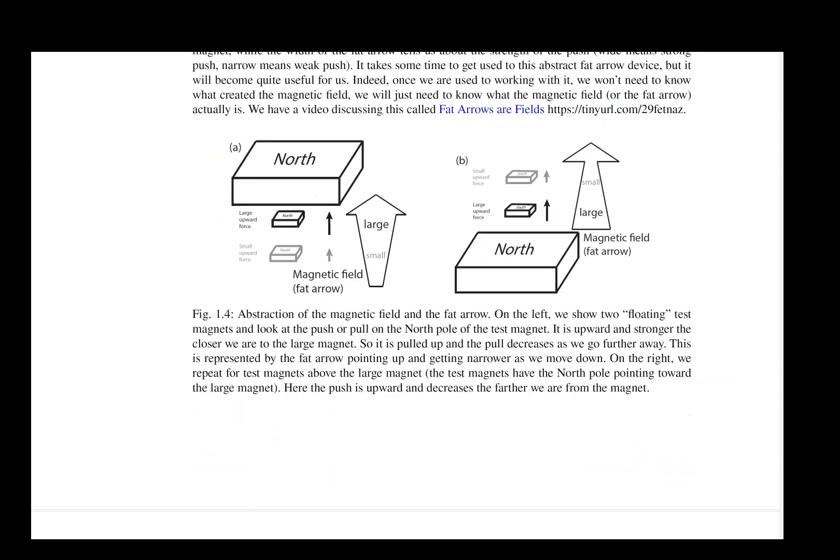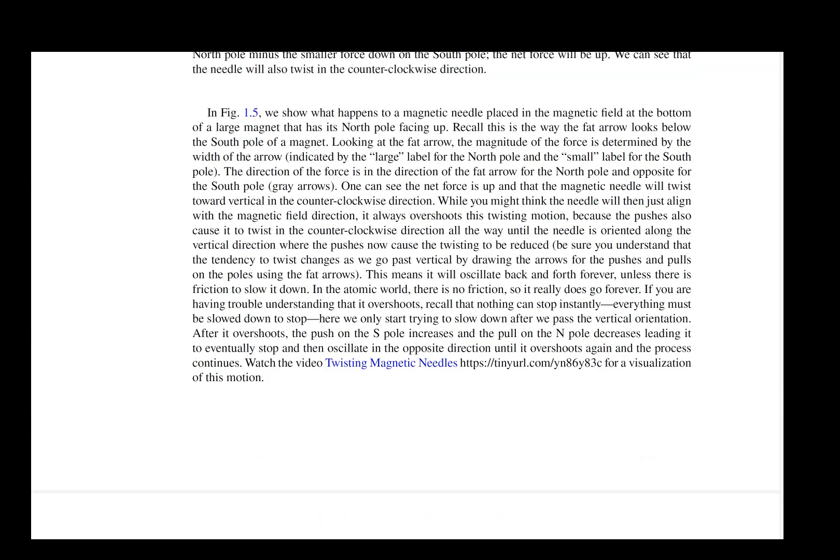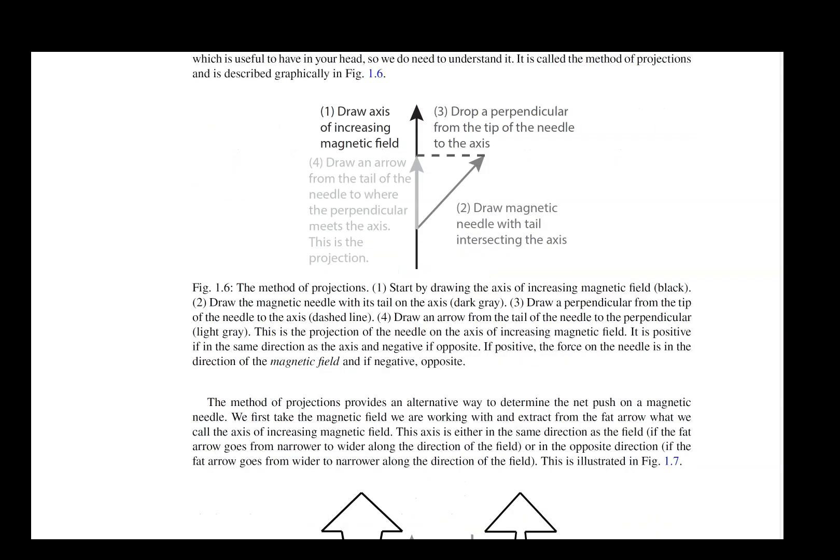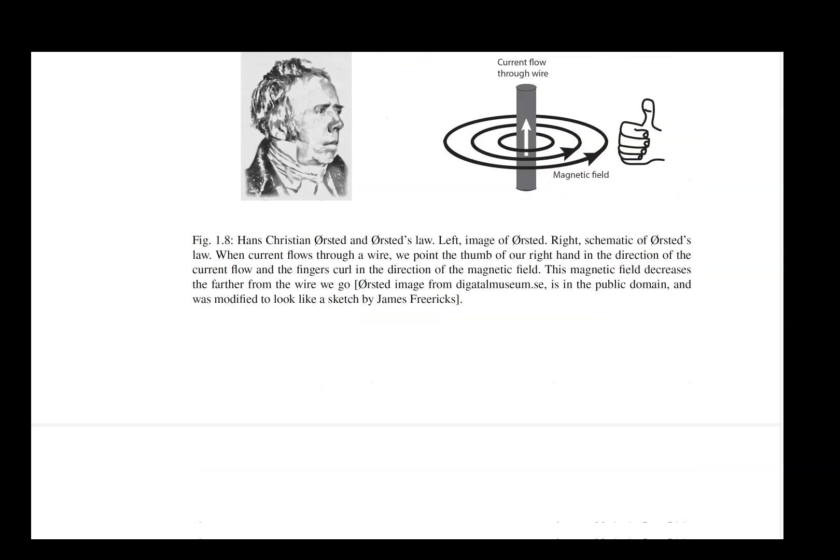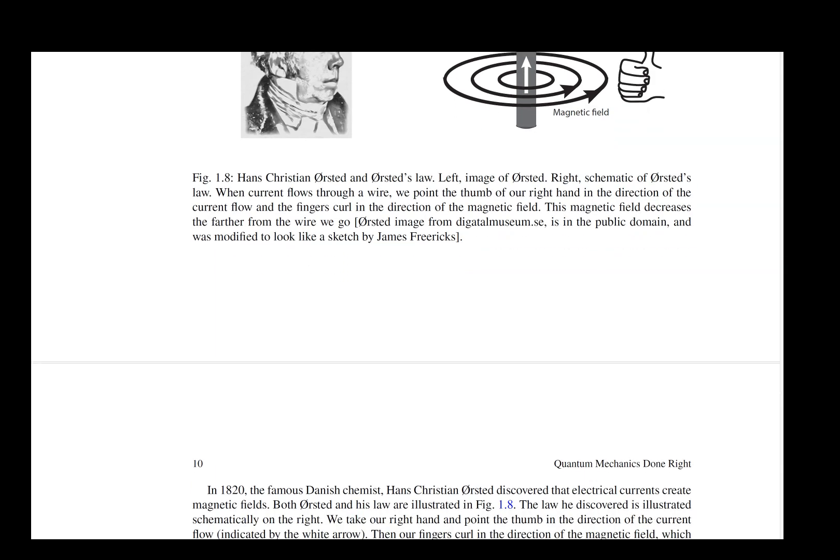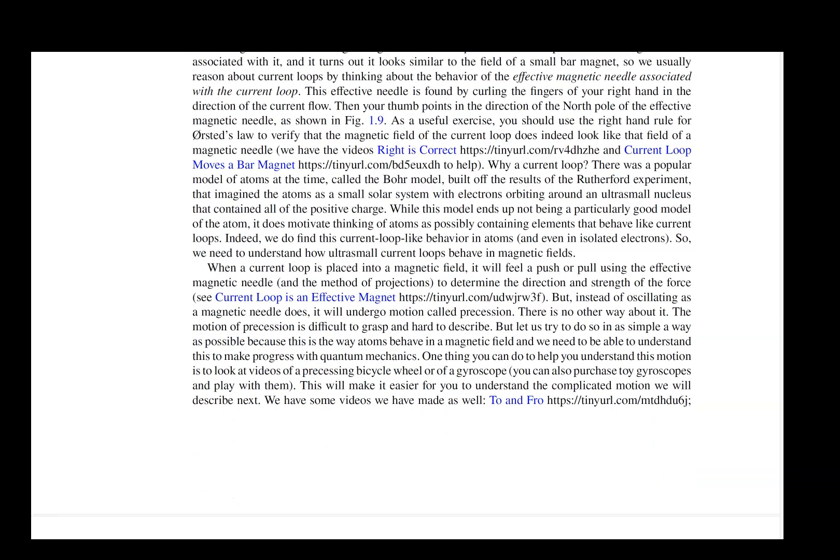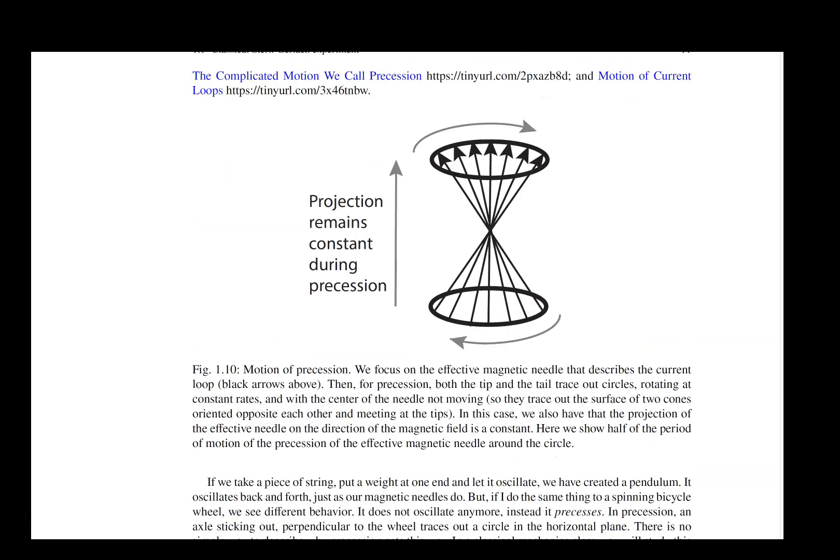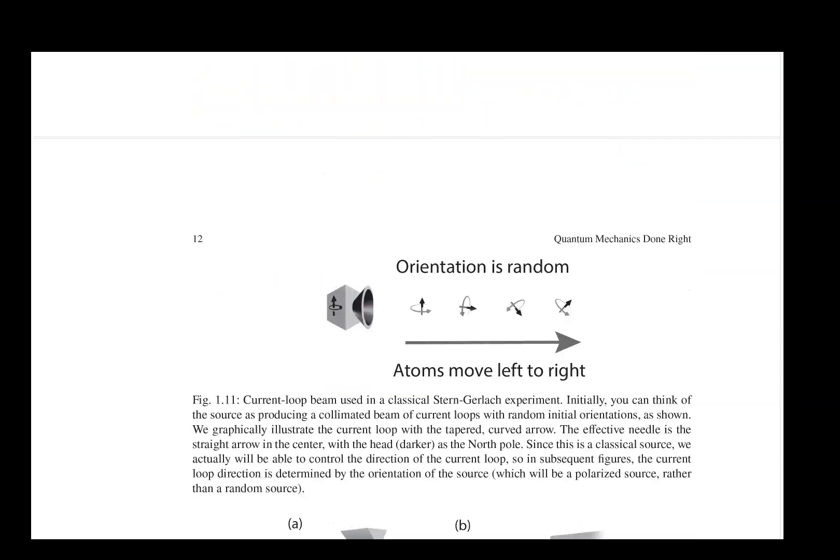And then we'll just dive into how a classical Stern-Gerlach experiment works. We have this wonderful paradigm that was invented by Daniel Steyer about how we can think of inhomogeneous magnetic fields by using fat arrows. We use that to describe how magnets work and what kind of forces magnets will feel. And then we move into talking about current loops. These were discovered by Oersted. And a current loop behaves a bit like a magnet, but it has some behavior that's a little bit different. It requires us to understand what precession is. So we'll tell you about how precession works.